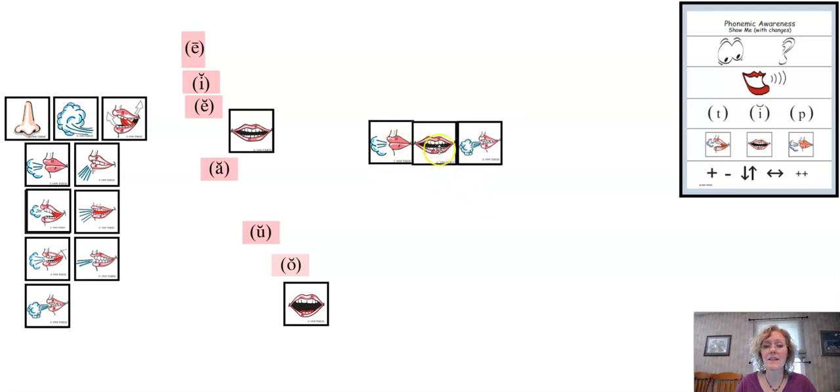If this is batch, B-A-TCH, show me catch. Echo. Catch. Unblend. C-A-TCH. Where was the difference? Where did we hear the difference on this one? Initial. Initial position. This was a B and we need a C. So let's put up our lip puffer. And we need a C. What sound? Which picture is a C? That's a back kicker.